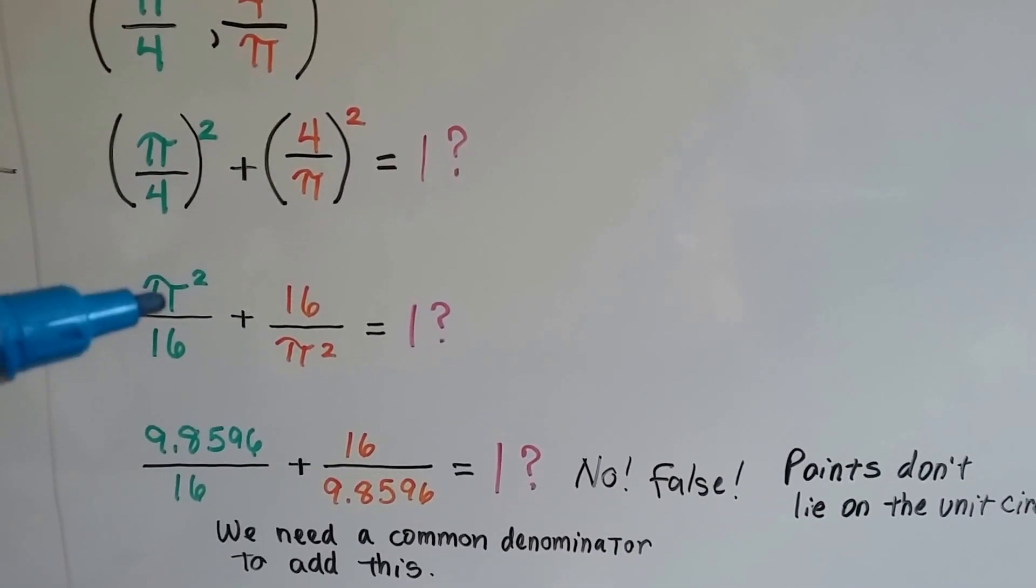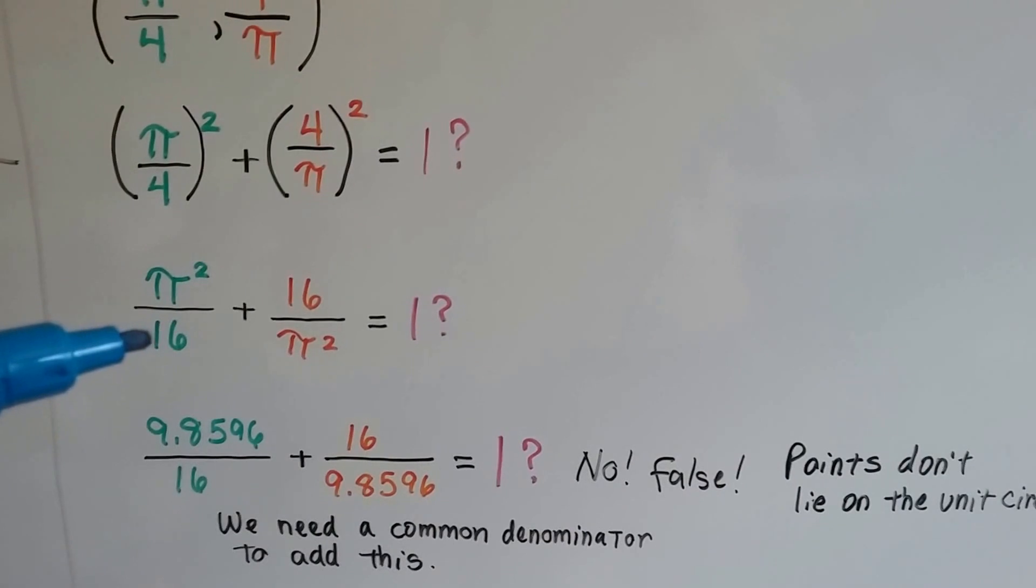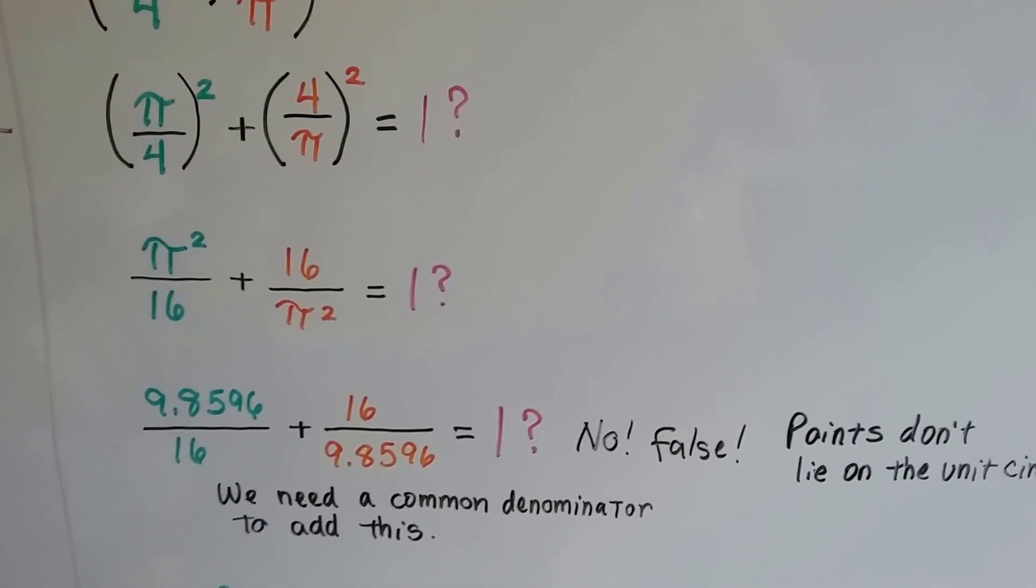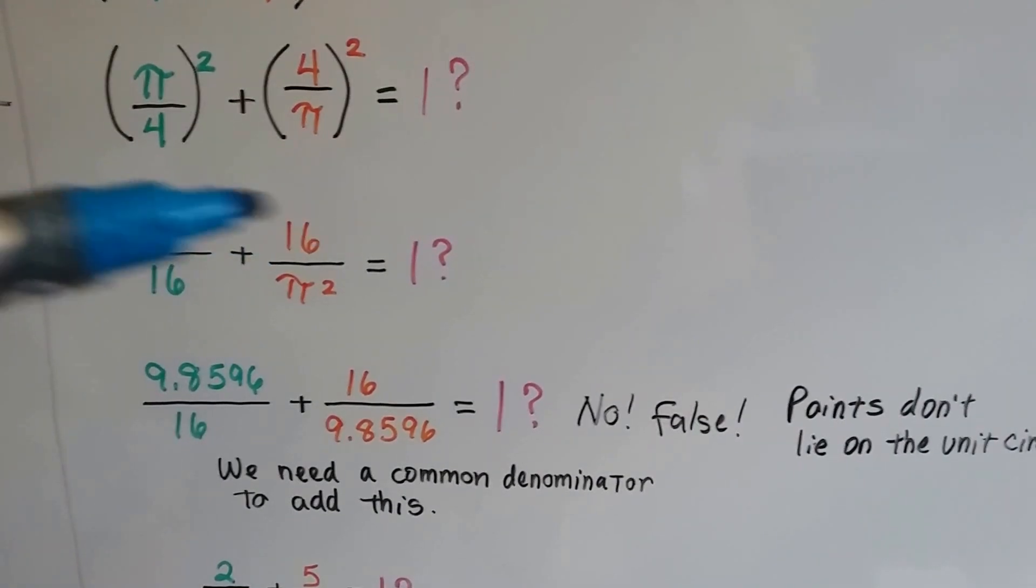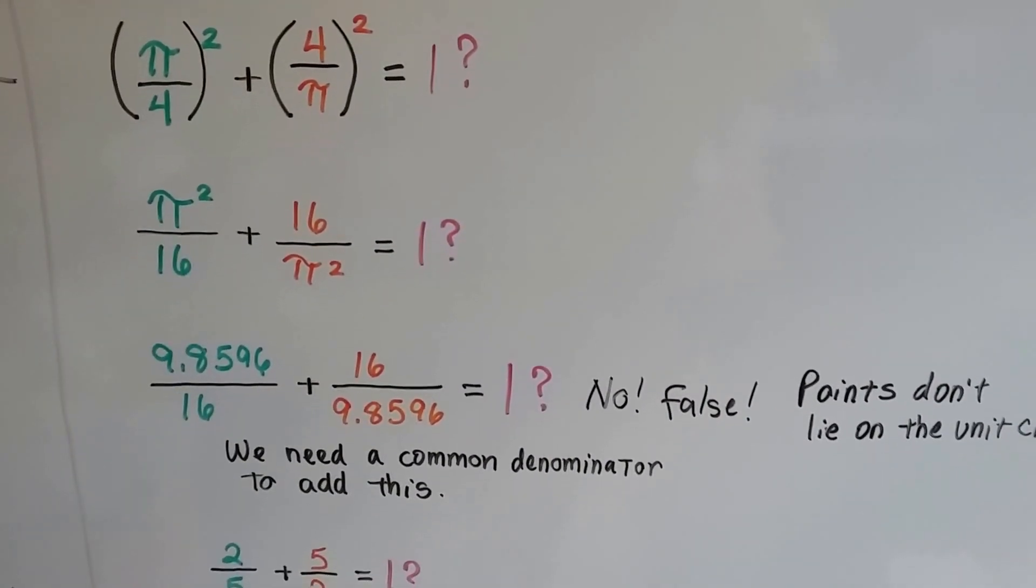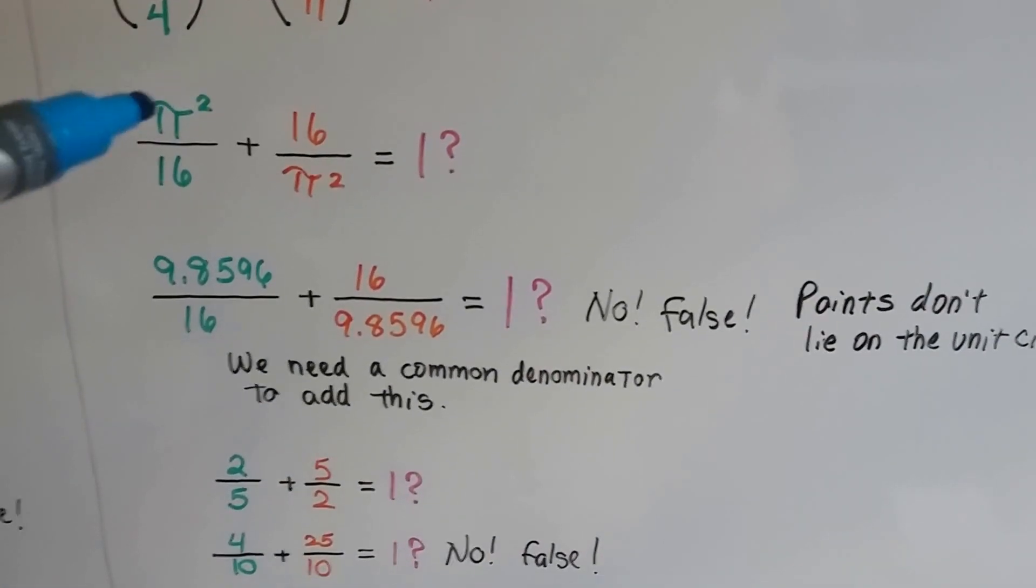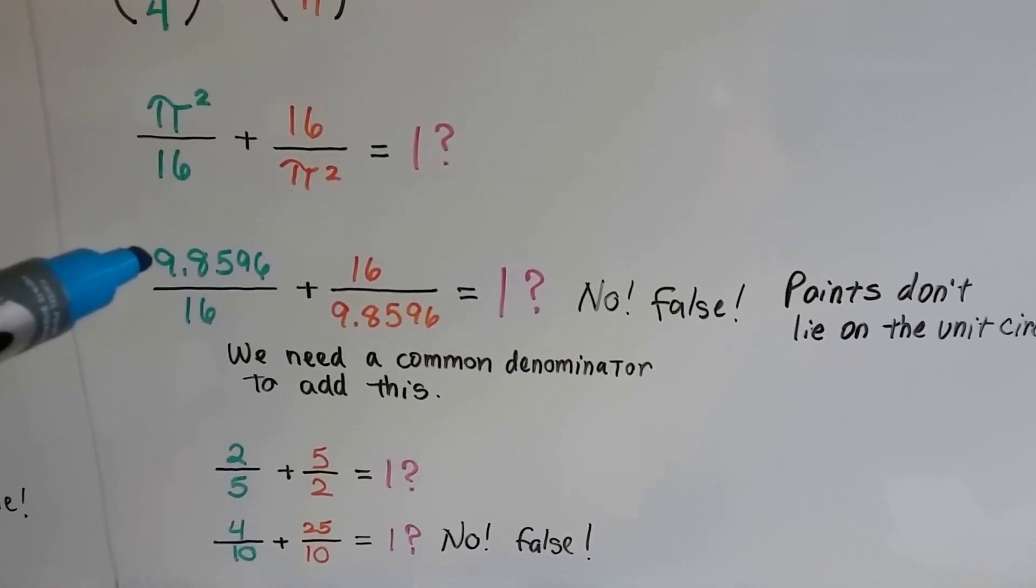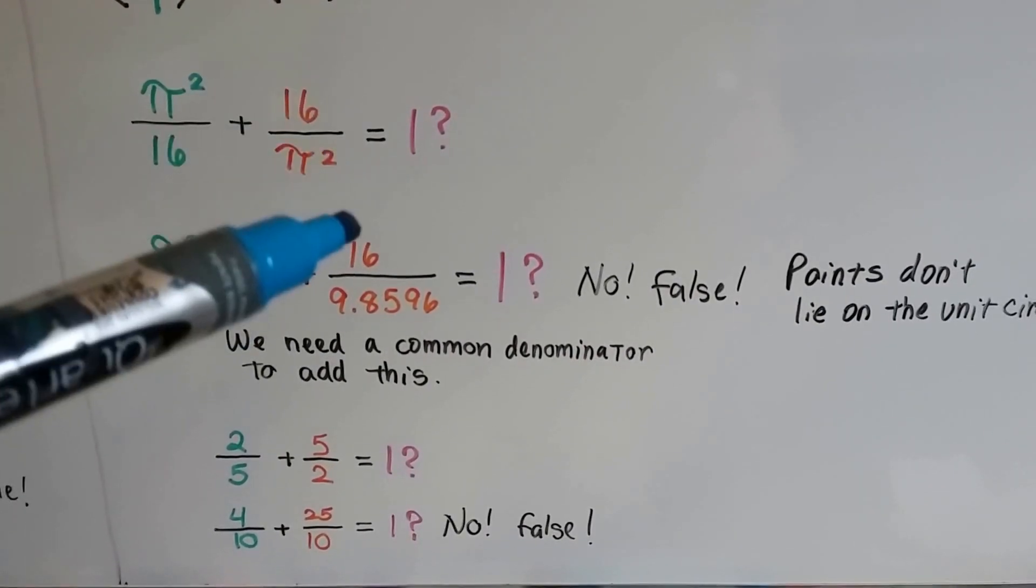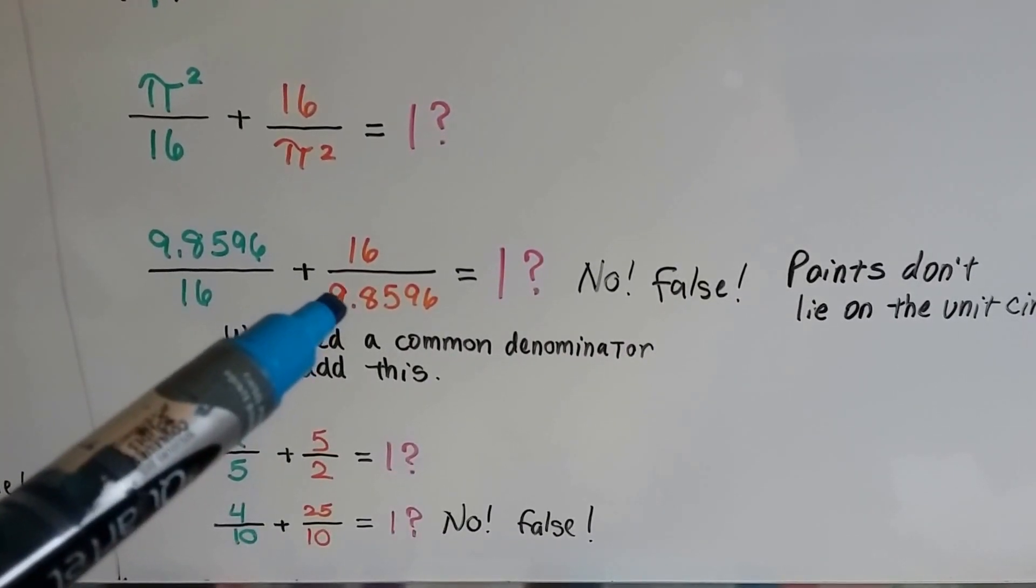When we square this, we get pi squared over 16, and we get 16 over pi squared. Now you may still say, oh yeah, it's the same thing. Well, we're not multiplying, we're adding. When we square pi, it's approximately 9.8596 over that 16, and this side would be 16 over that 9.8596.